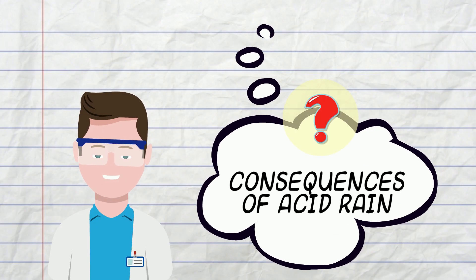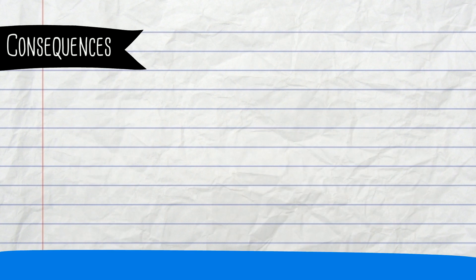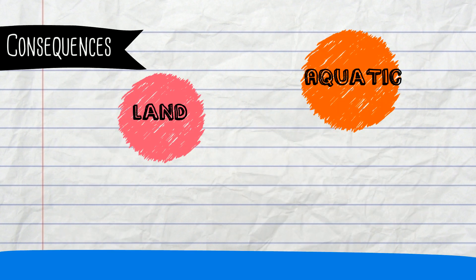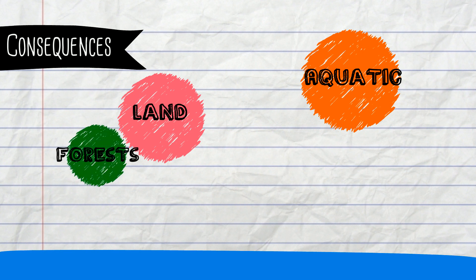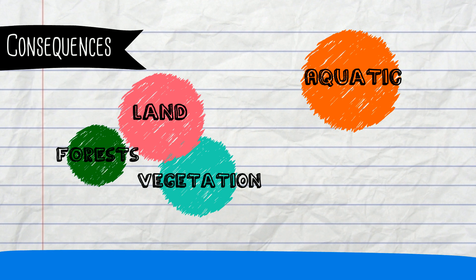But what are the consequences of acid rain? There are adverse effects on the land and aquatic environments. On the land, it can damage the forests and vegetation. The soil can become acid and will kill enzymes and microbes essential to biodiversity.